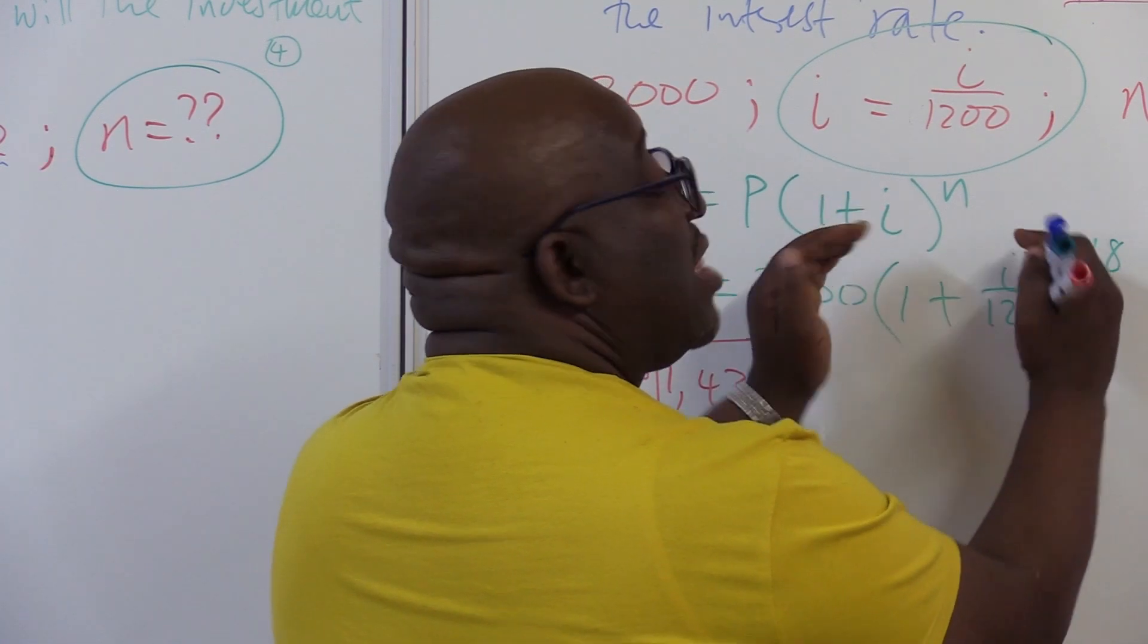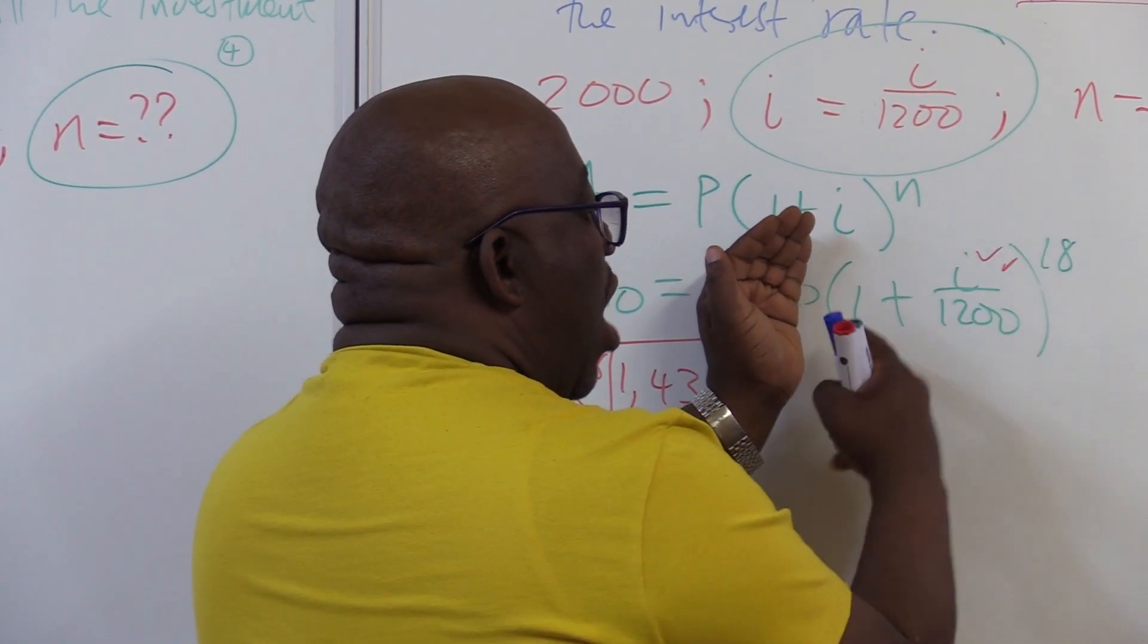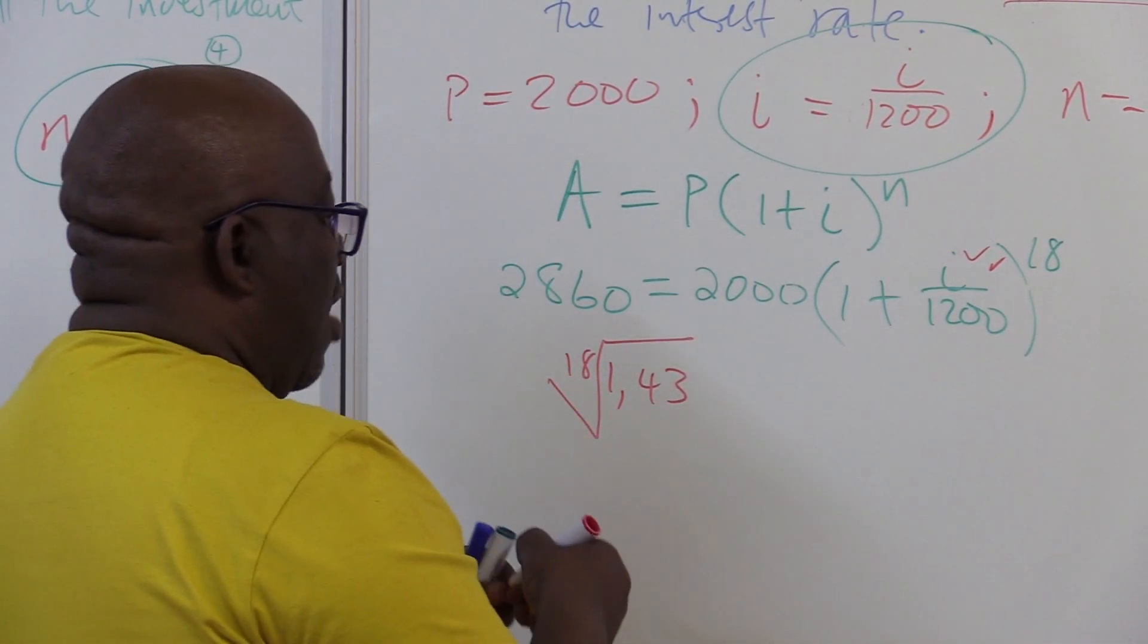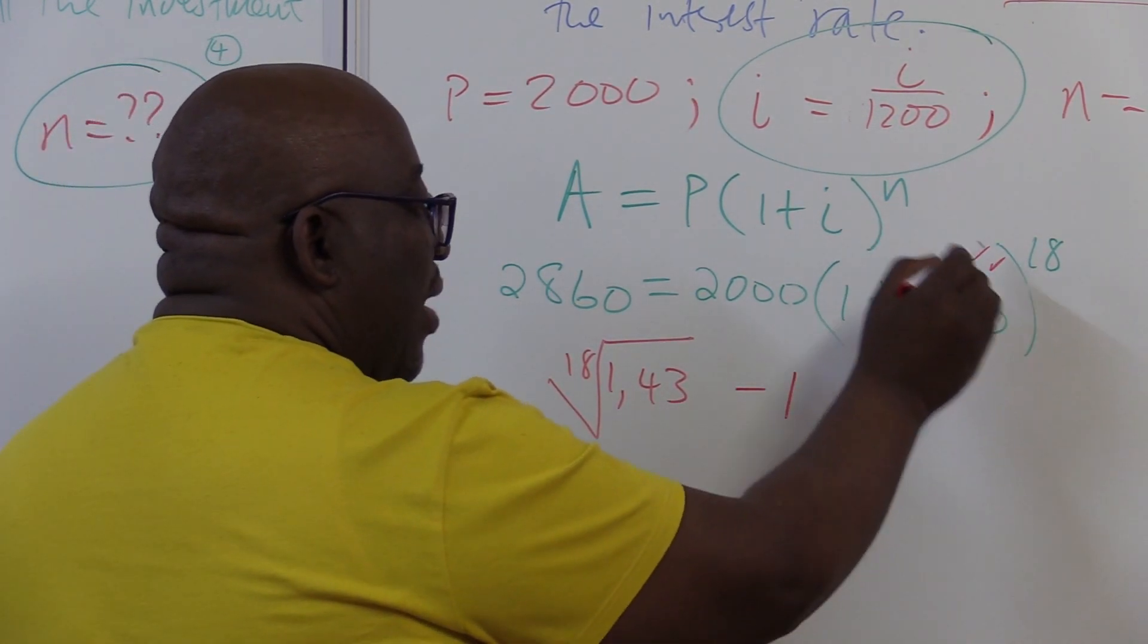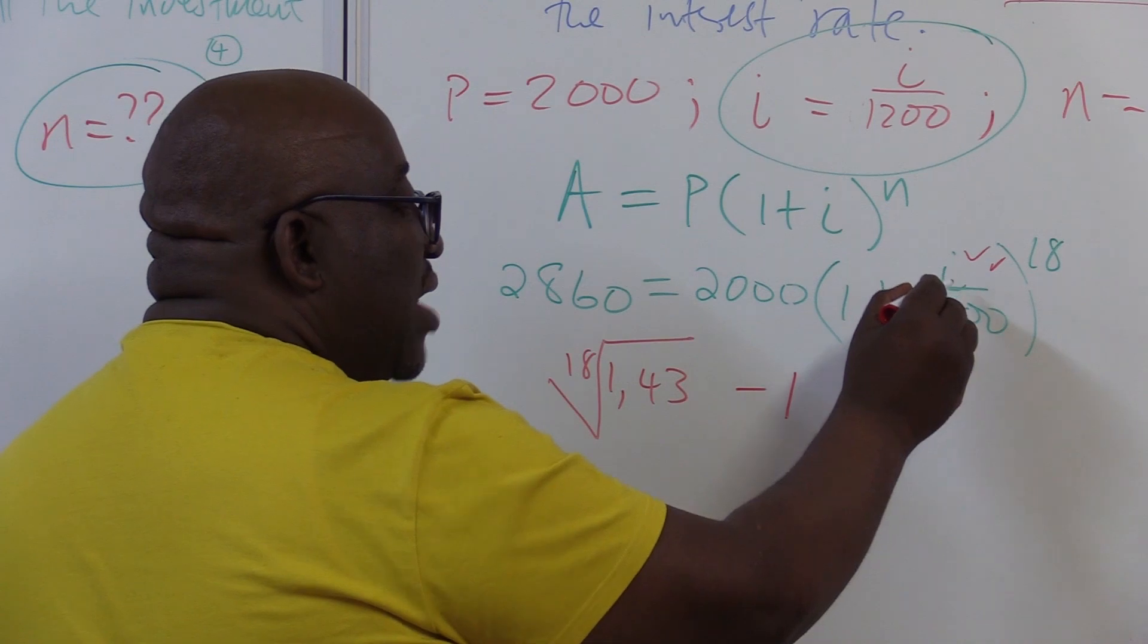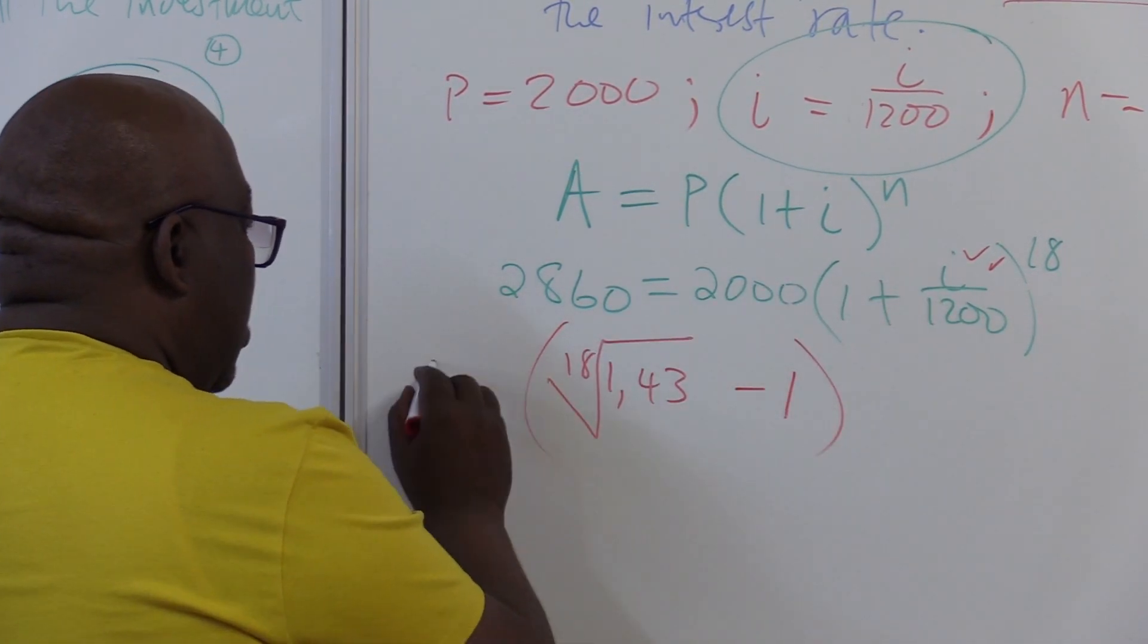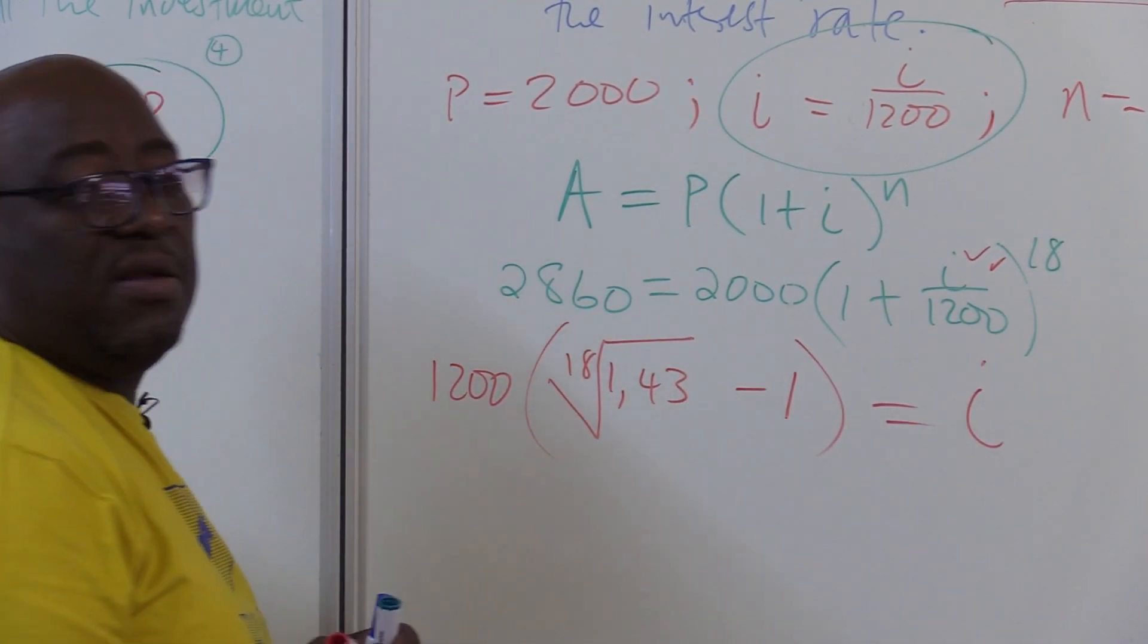I'm left with what is inside the brackets. What must I remove now? I've got to remove this one, transpose it the other side, it will be minus 1. So I will have minus 1 now. How do I isolate I? I multiply it by 1200 on both sides, then I'm left with I this side.